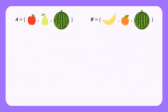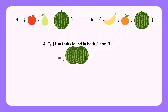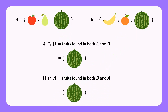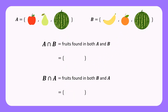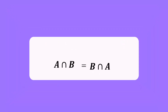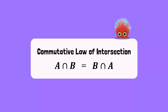Does this law also apply to intersection? Let's see. Let's find A intersection B and B intersection A. A intersection B is the set containing fruits in both A and B. Since watermelon is the only fruit that is common to both sets, A intersection B contains only the watermelon. Observe that A intersection B and B intersection A have the same set of elements. Therefore, A intersection B is equal to B intersection A. This example shows that when we take the intersection of two sets, the order does not matter. Therefore, we also have the commutative law of intersection.